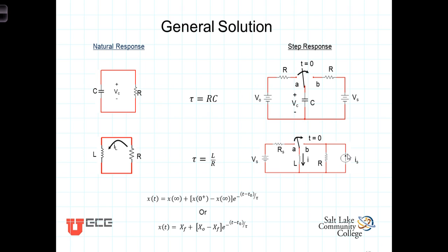For the RC circuit, the time constant tau was simply equal to the product of the resistance times the capacitance. For the RL circuits, the time constant was equal to the ratio of the inductance to the resistance.